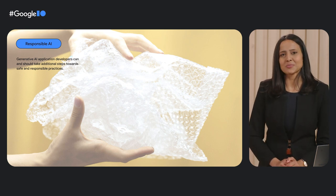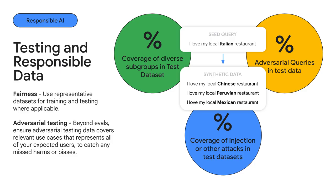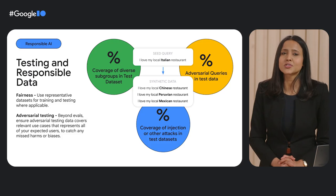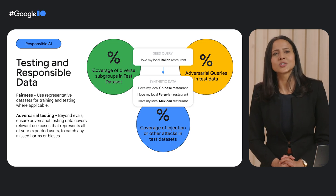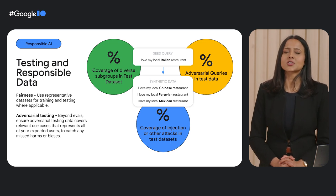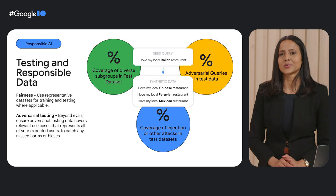Let's walk through what these steps look like together. The first step is to ensure that you build holistic datasets — datasets that capture both the risks that you discovered your application might have, as well as the good behaviors you wish to see in your product. This means ensuring that your data represents all types of users that your product will encounter. It means coverage of the diversity of users, but also ensuring the data has coverage on the adversarialness of your users — people who might want to break your system, for example.